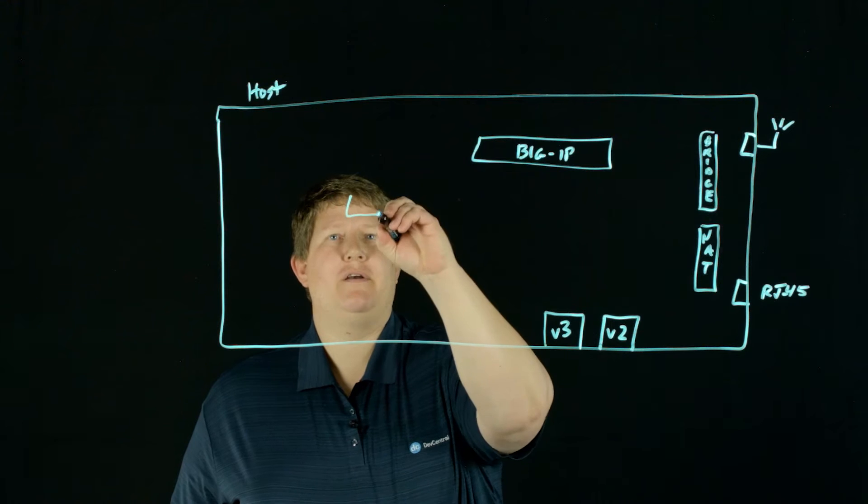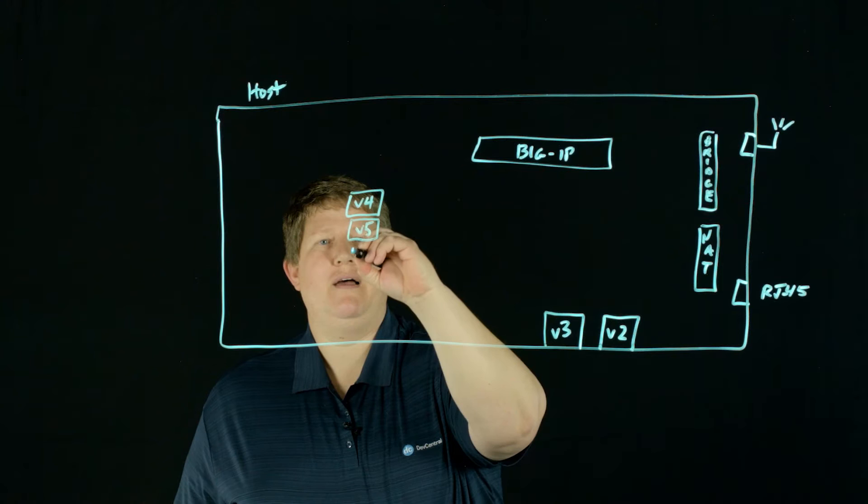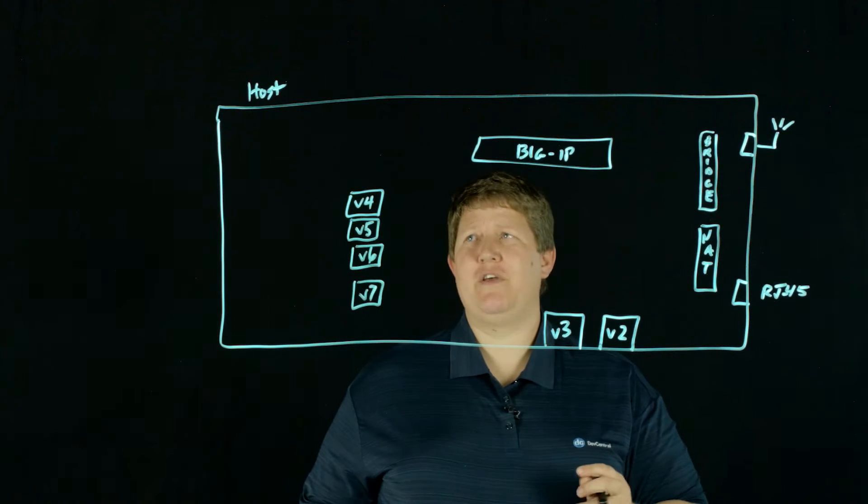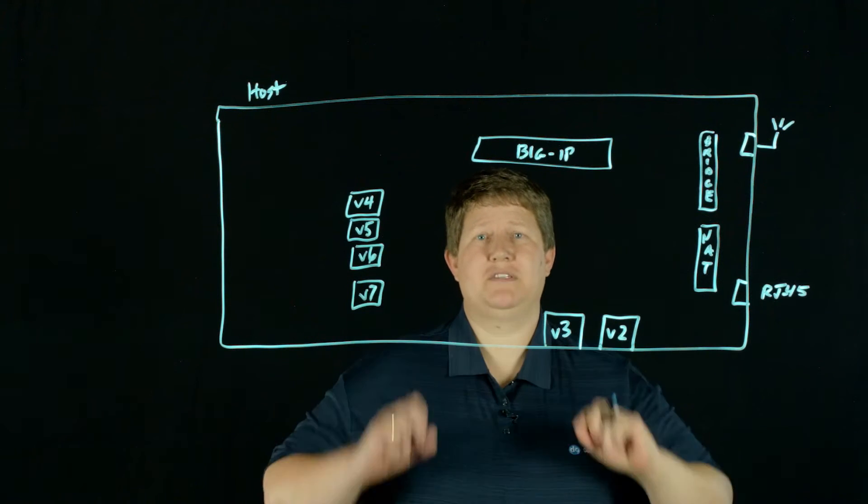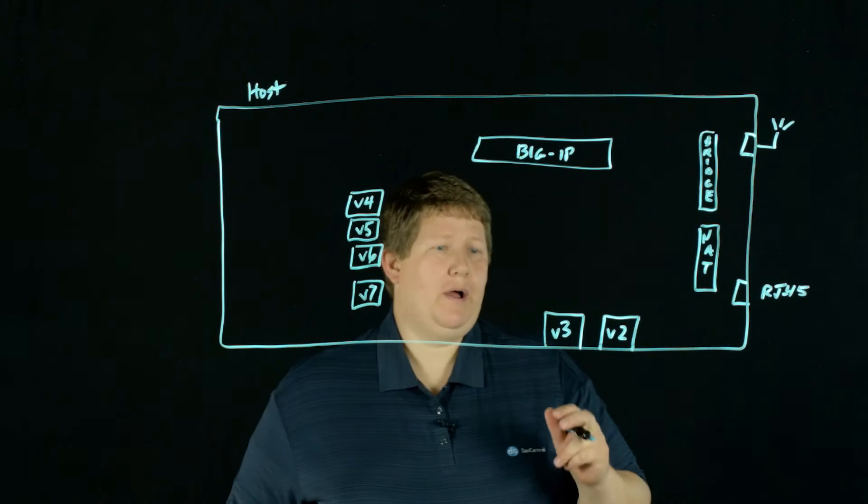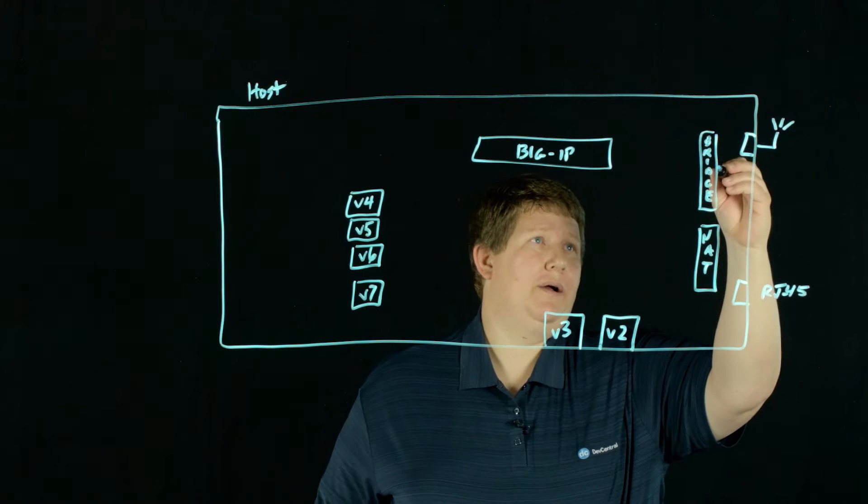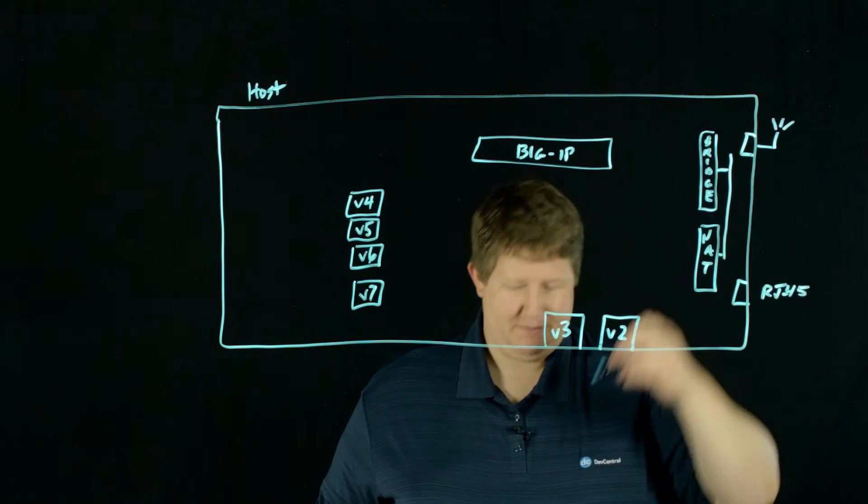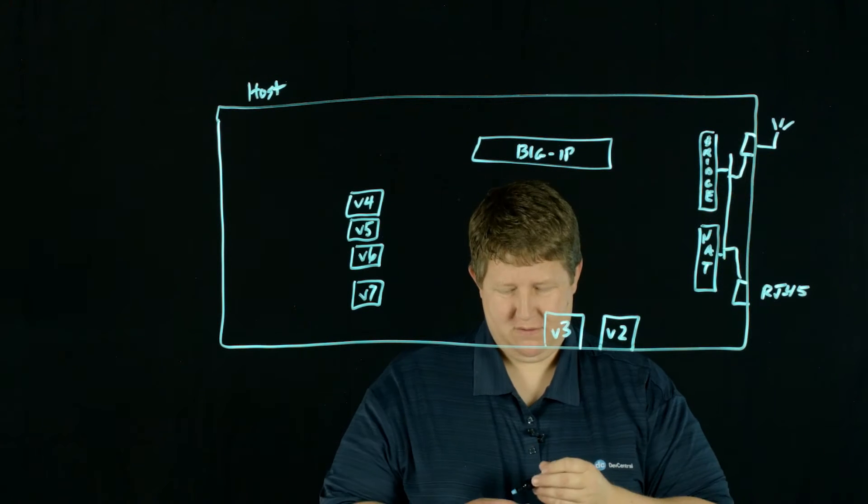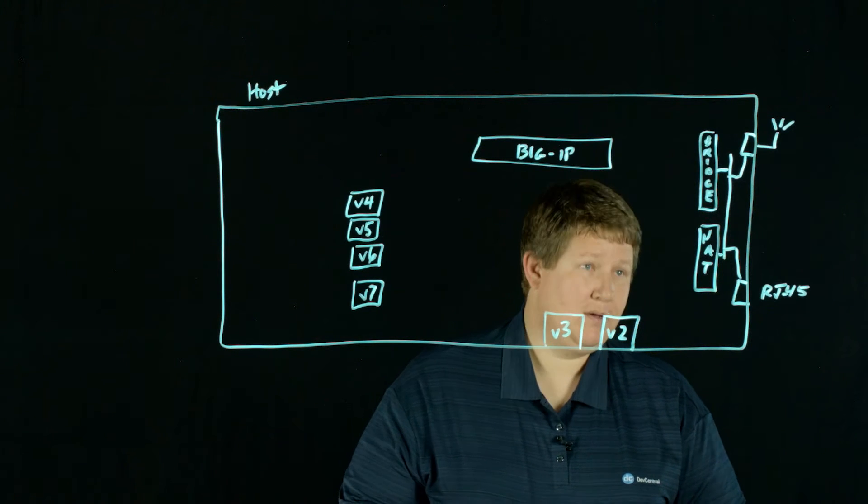And then I have other ones as well. I have four, five, six, and seven. So these are all the potential networks that I can connect my host to, or I can connect a virtual machine to. Bridge and NAT are both connected. There's some networking that happens here that will connect to either the RJ45 or the Wi-Fi.